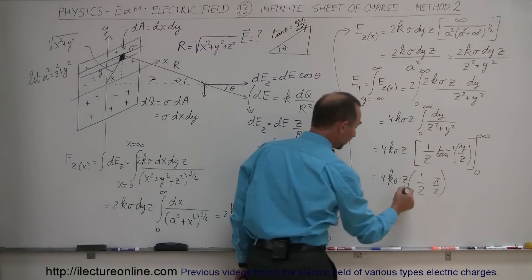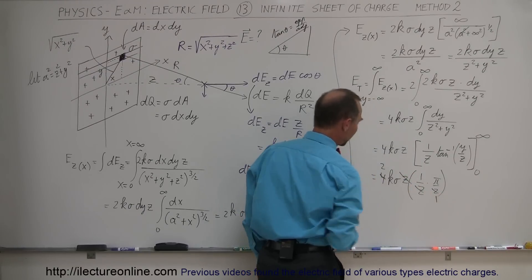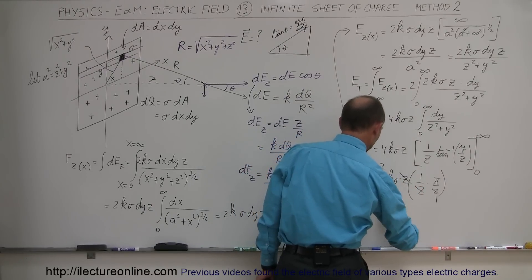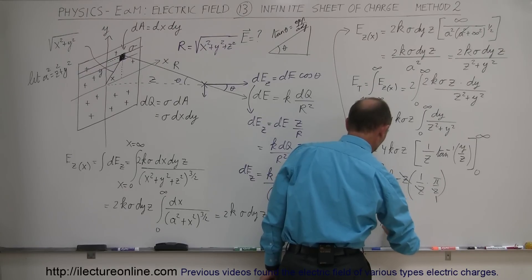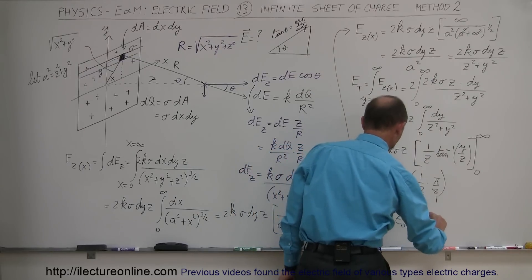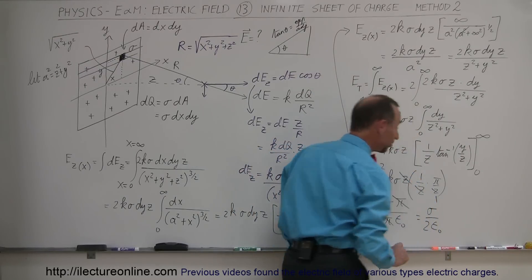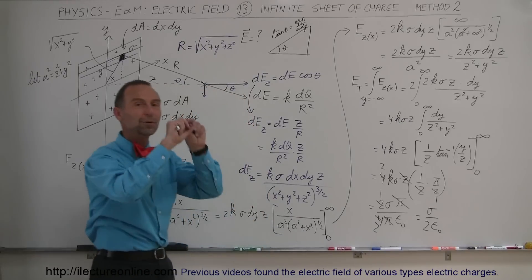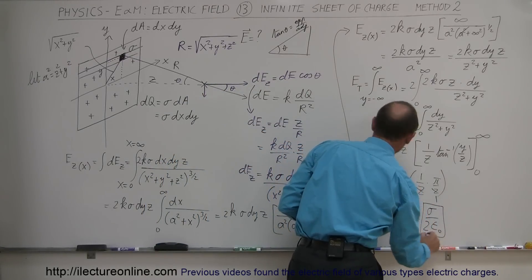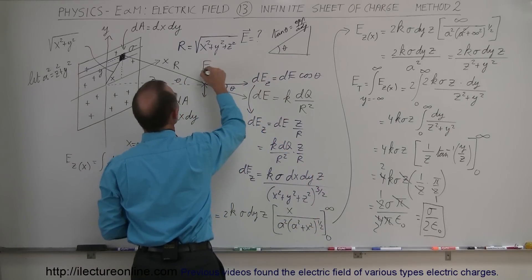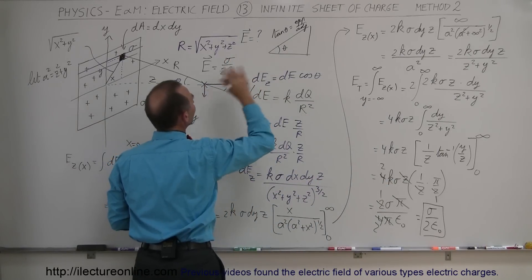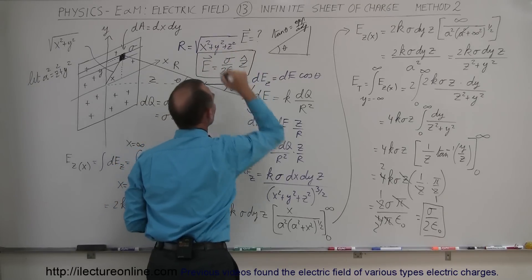The z's cancel, and we get 4k sigma times π/2, which equals 2kσπ. Since k = 1/(4πε₀), substituting gives 2σπ divided by 4πε₀. The π's cancel, and the 2 over 4 simplifies to 1/2, leaving the final result: E = σ/(2ε₀). This is the exact same answer obtained in the previous video using ring-shaped elements.